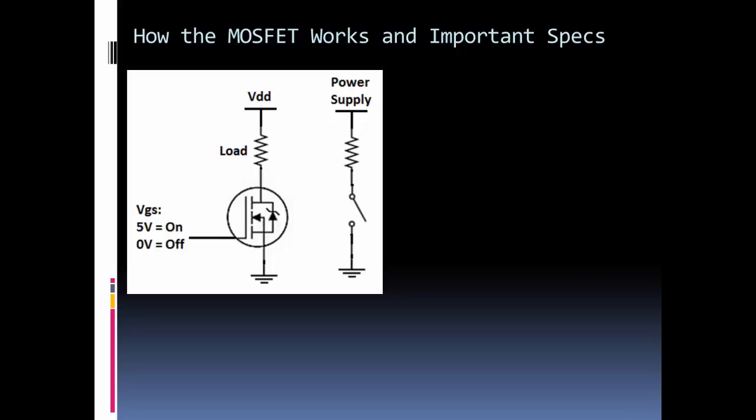Let's look at how you would use a MOSFET as a switch and some of the important specs. Here I have a setup with an N-channel MOSFET. I have VDD at the top, which is essentially my power source. I'm showing a resistor symbol for the load, so this is what I'm trying to switch on or off, or apply power to. Then I have my MOSFET, and then I have ground.